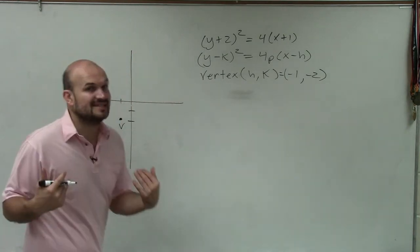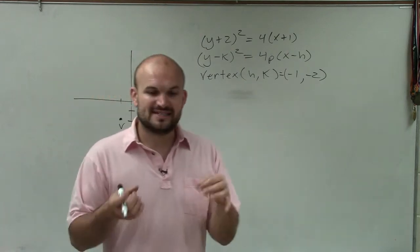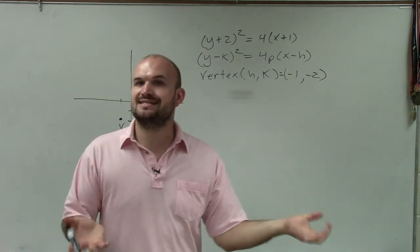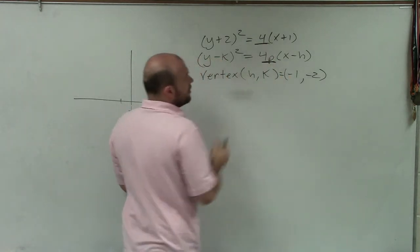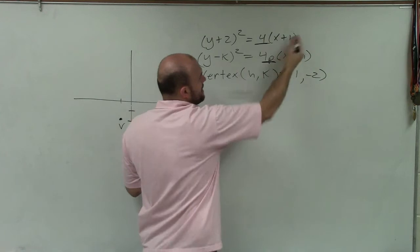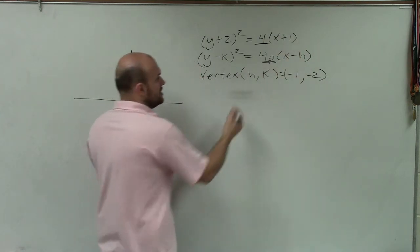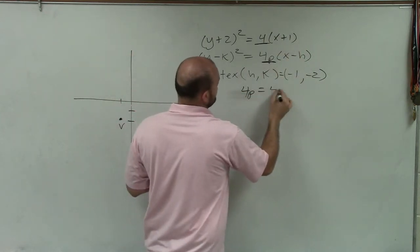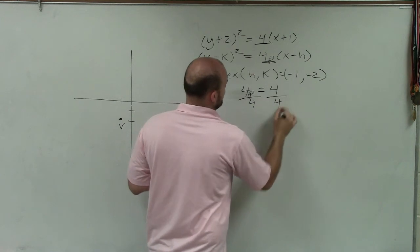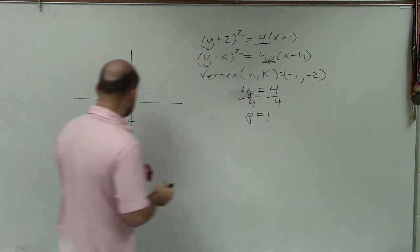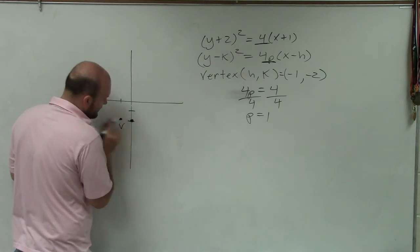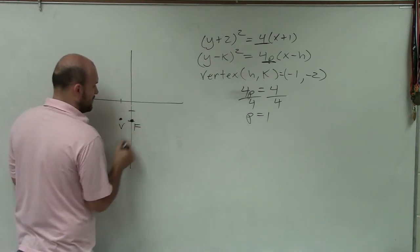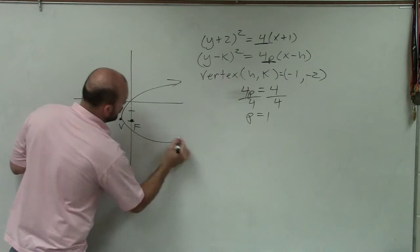The distance from the vertex to the focus is the value of p. What I can see is 4p equals 4, since these are both multiplied by x minus h. So 4p equals 4, divide by 4, p equals 1. Therefore, if I just go over one unit, there is going to be my focus. Now I know that the parabola is going to open up to the right.